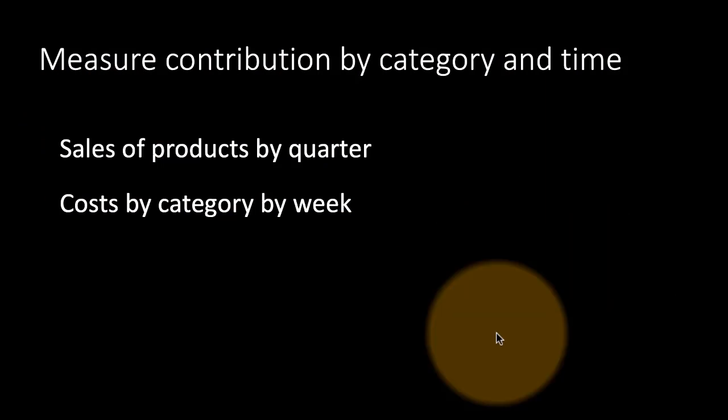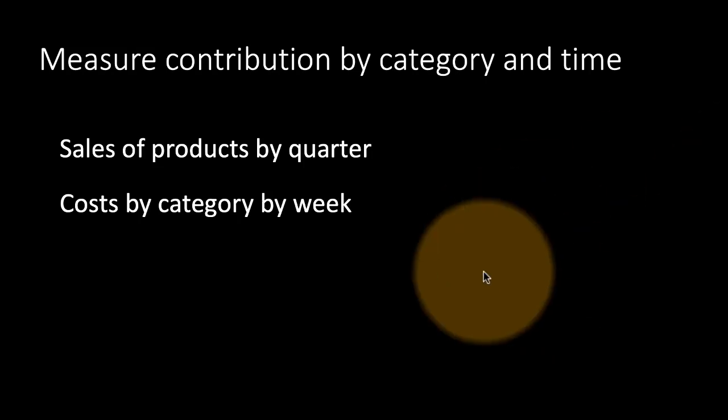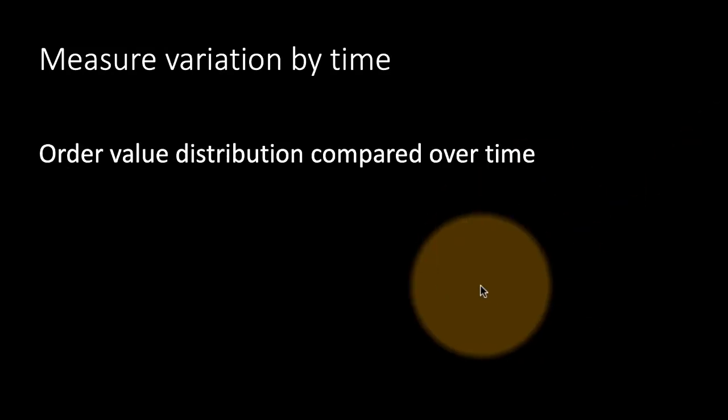Earlier, we saw a pattern that said measure change over time—like how has unemployment changed over time. So you're looking at the unemployment level, let's say for every week or day or month and then we are seeing how that is changing over time. Now we are going to look at something slightly different, although the name may seem quite similar. I'm calling this measure variation by time.